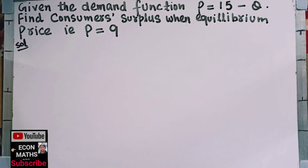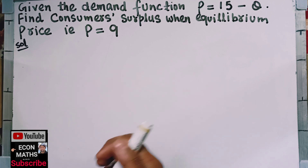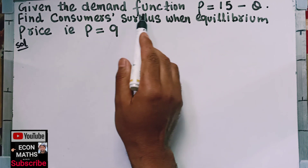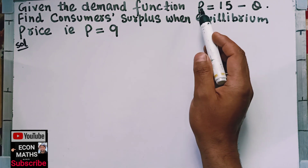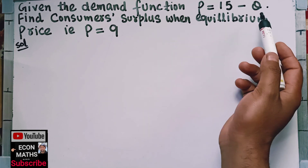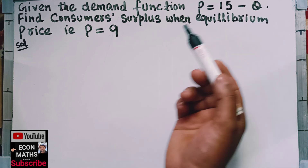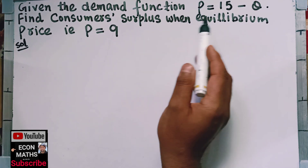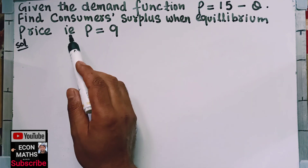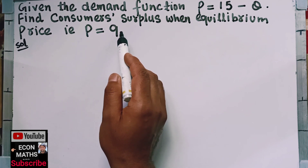Hi, this is Halal. In this video on mathematical economic series, we will solve a numerical on consumer surplus. The question is: given the demand function P is equal to 15 minus Q, where P is the price and Q is the quantity, find consumer surplus when equilibrium price is P is equal to 9.